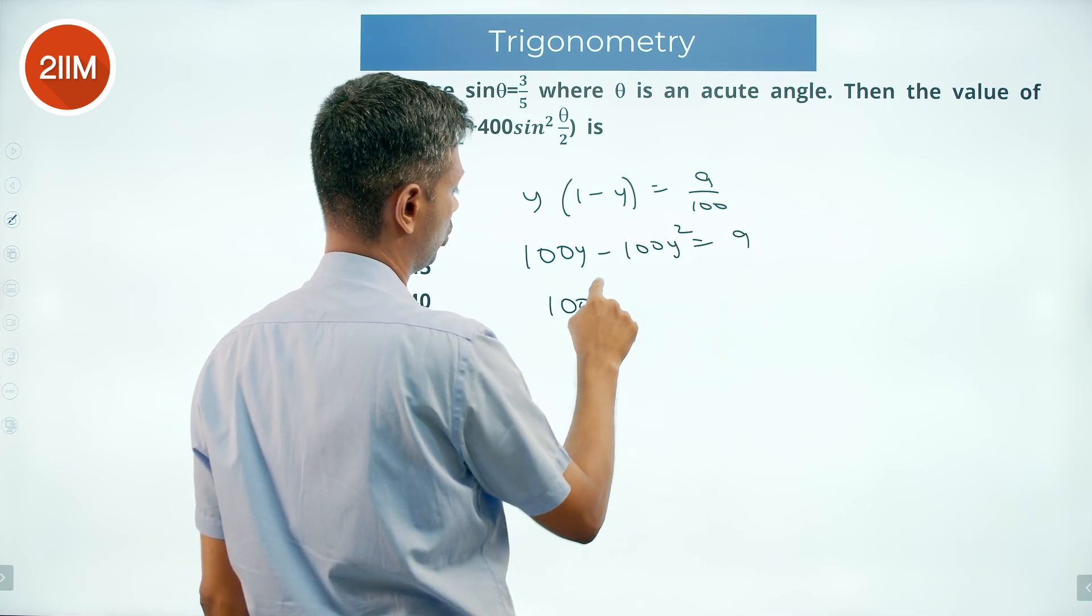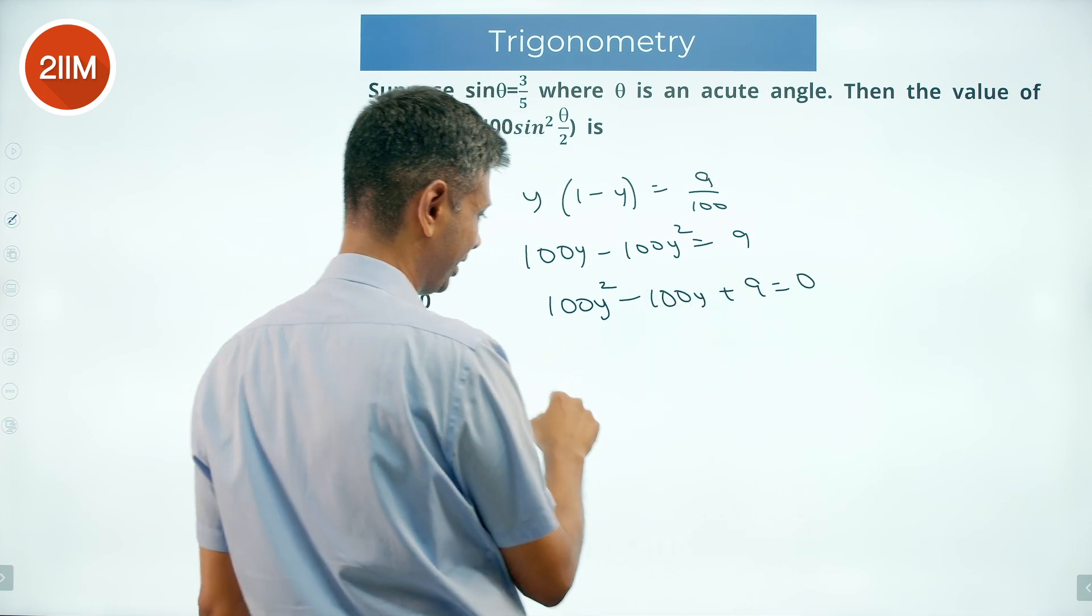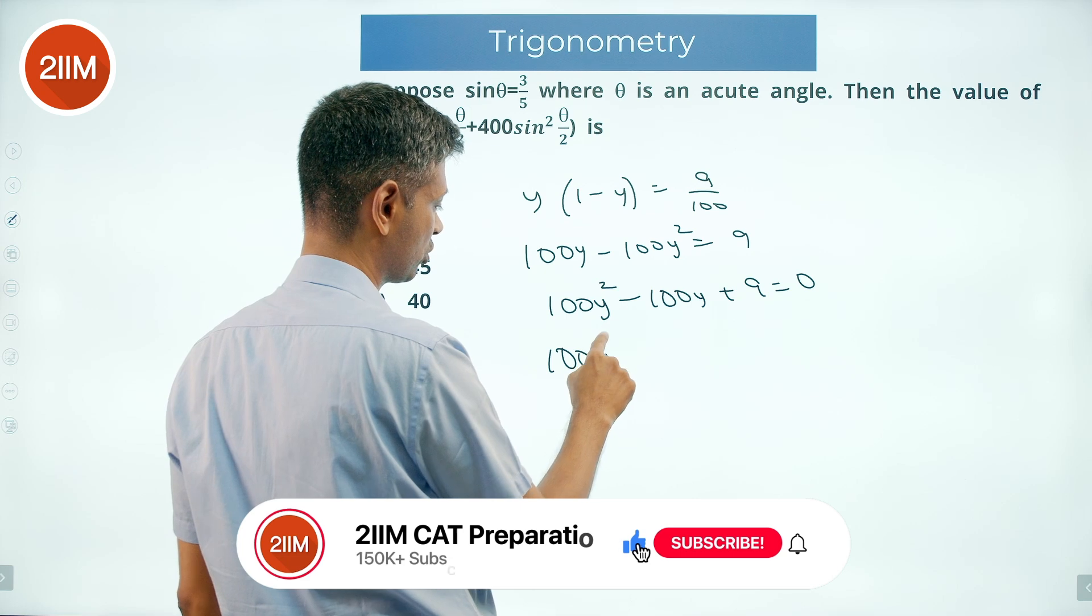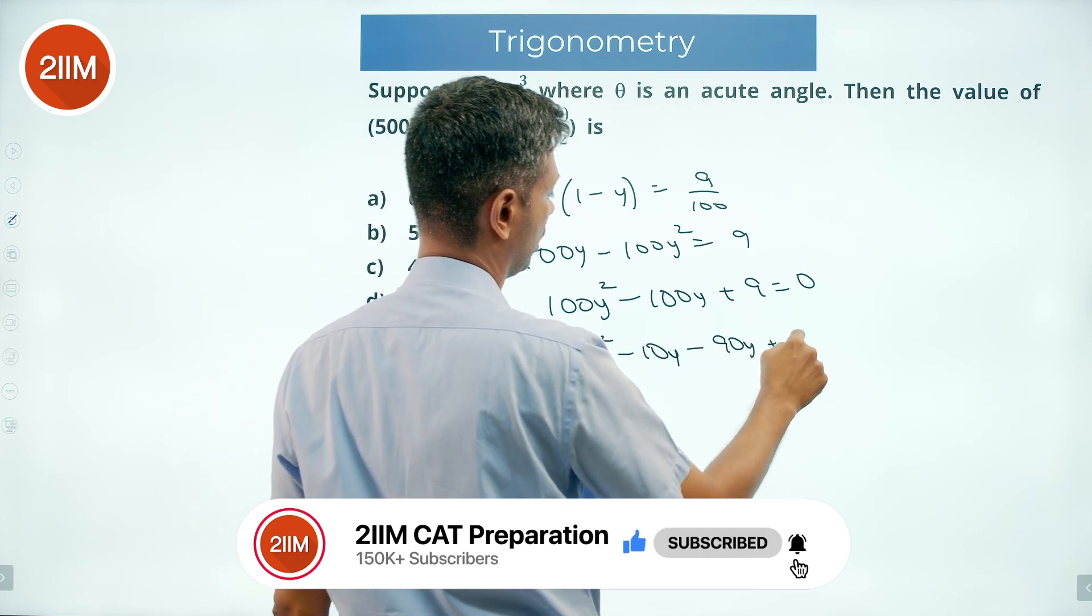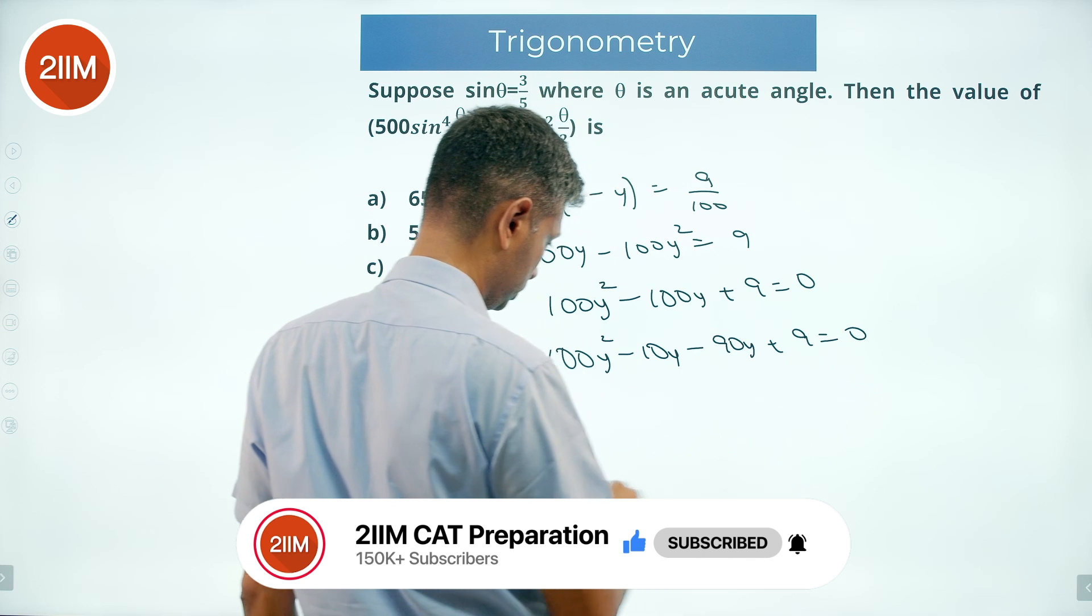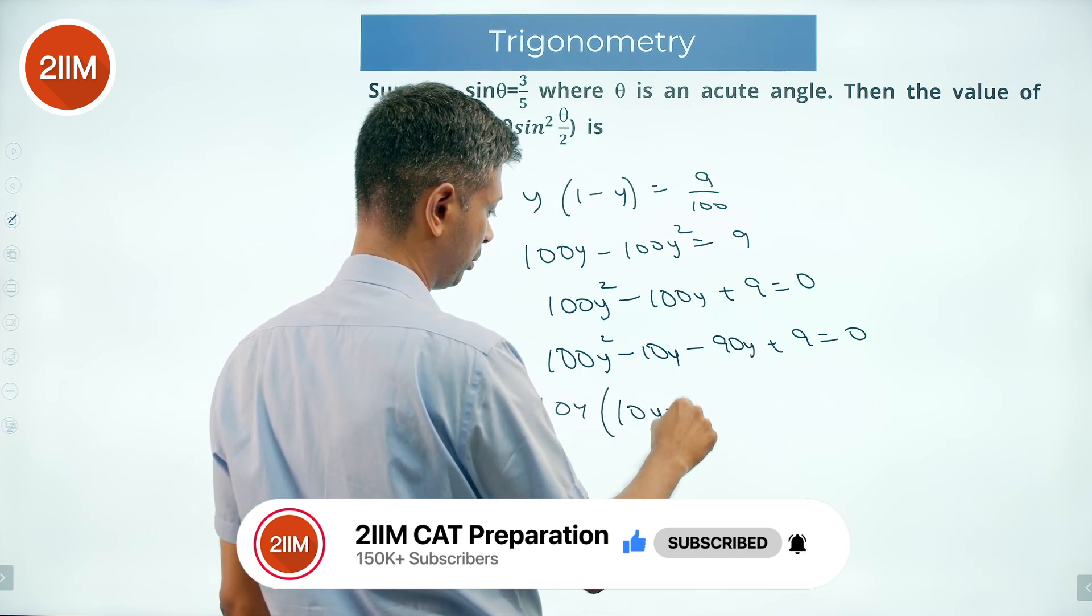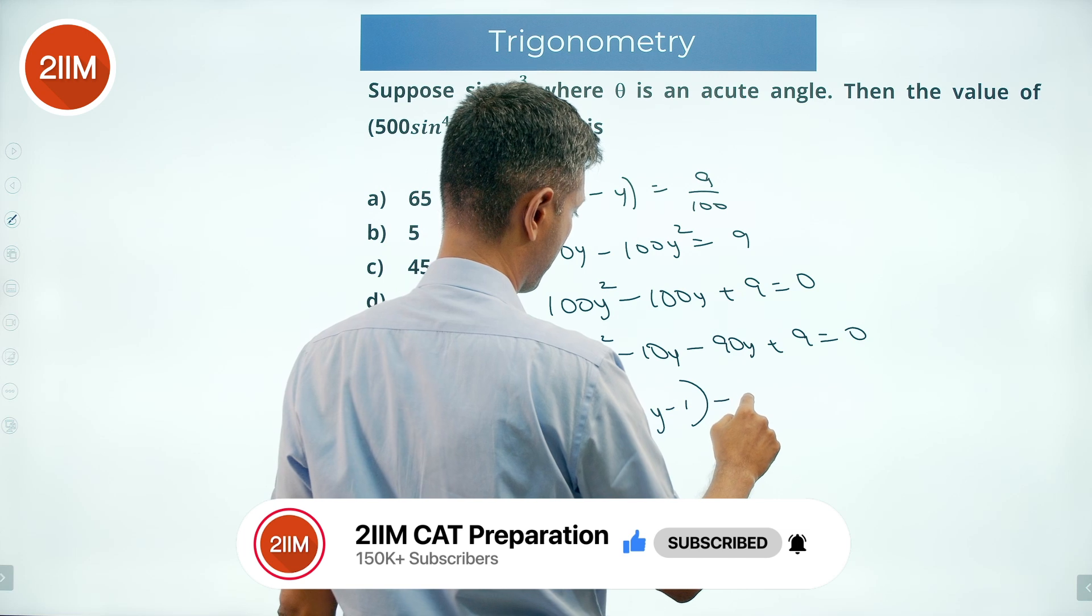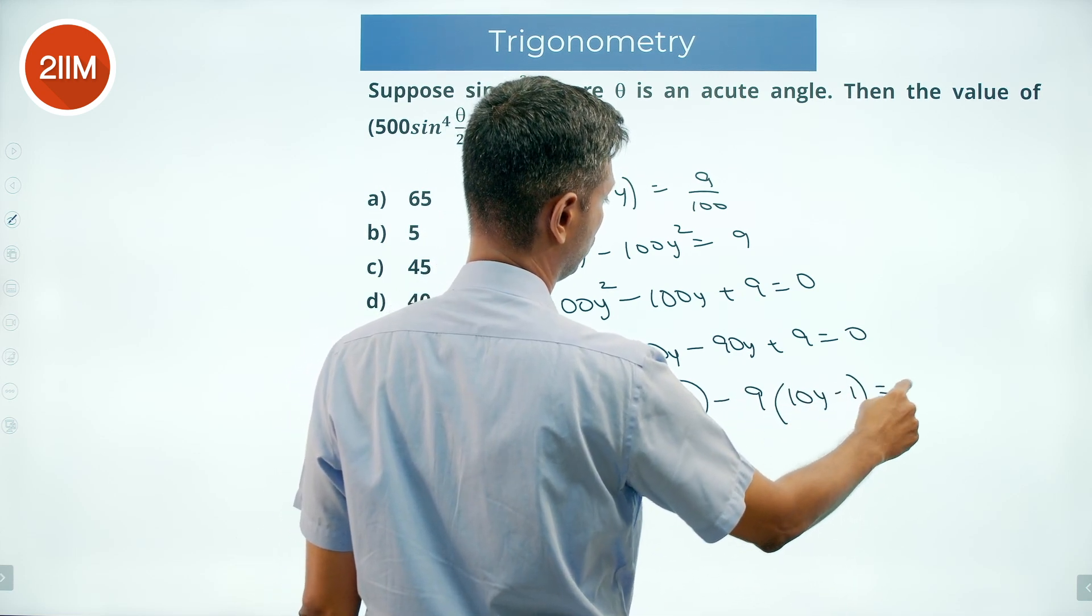100y square minus 100y plus 9 equal to 0. Product of 900, I can say 100y square minus 10y minus 90y plus 9 equal to 0. 10y times 10y minus 1 minus 9 into 10y minus 1 equal to 0.